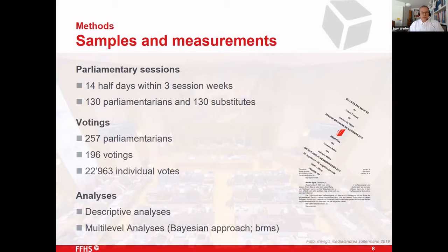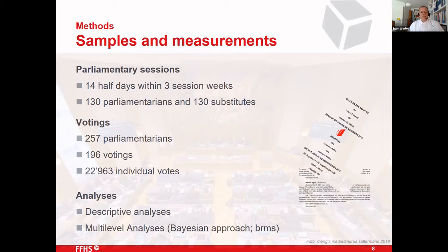The parliament we chose has 130 parliamentarians and 130 substitutes, so 260 in total. We took three session weeks with 14 half-days of session time. First we had to create groups of vote winners and vote losers. In these 14 half-days there were 196 voting events with nearly 23,000 individual votes, which allowed us to build the groups.